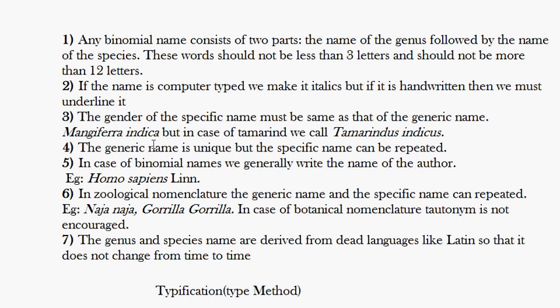You can visualize the binomial name like this: the generic name can be thought of as a noun — the actual name of the organism — while the specific name just describes the species, like an adjective.